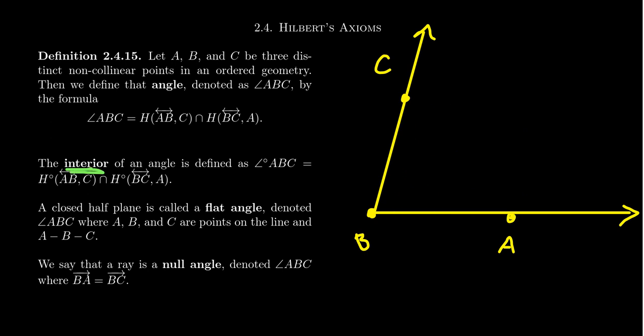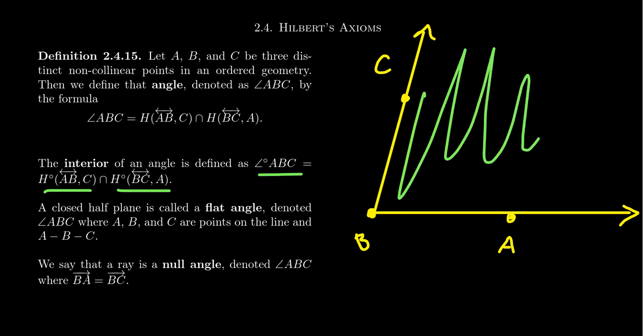Now, we can talk about the interior of an angle. The interior of the angle, which will be denoted with a little circle here. This is a topological notation, describing an open set here because we're no longer including the boundaries. So the interior of the angle, or sometimes called the open angle, this will be the intersection of the open half planes. So what's the difference between the half plane AB with respect to the point C, and then the open half plane? The closed half plane contains the boundary line itself, while the open half plane doesn't contain the line. So when you look at the open angle, the interior of the angle, you don't get the rays BA or BC, but you do get everything else that is there. So that's the interior of the angle.